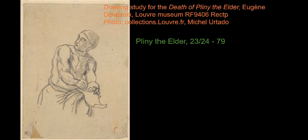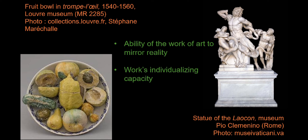So, what are, and how were built, the formal ways of aesthetic mimesis? We find some of these formal ways already in Pliny the Elder, although Pliny never used the word mimesis. For Pliny, the first formal element to become a rule of aesthetic mimesis is the ability of the work of art to mirror reality almost as a trompe-l'oeil. The second element is the work's individualizing capacity — its ability to distinguish one human being from another. How do we achieve this individualization according to Pliny?